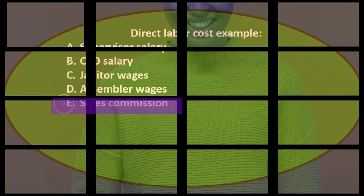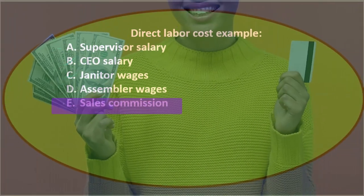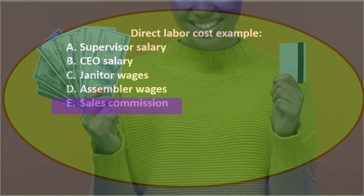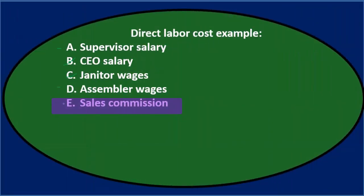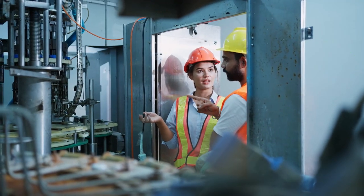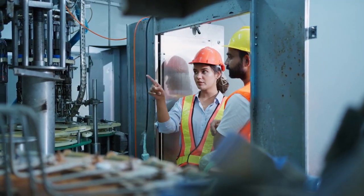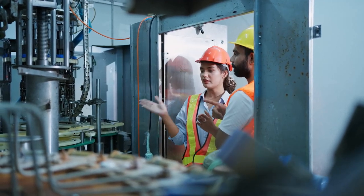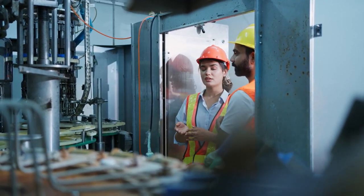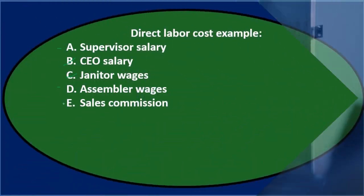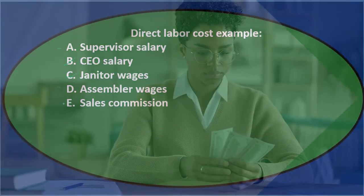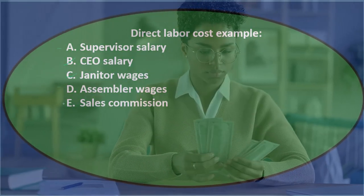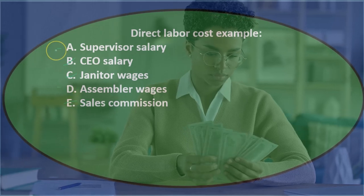E) sales commission — you might think that seems direct because it's tied to selling a particular job, but it's not part of production. It won't go on the job cost sheet because sales commission has nothing to do with the cost of inventory — it's a period cost, a selling cost, so it's not E.